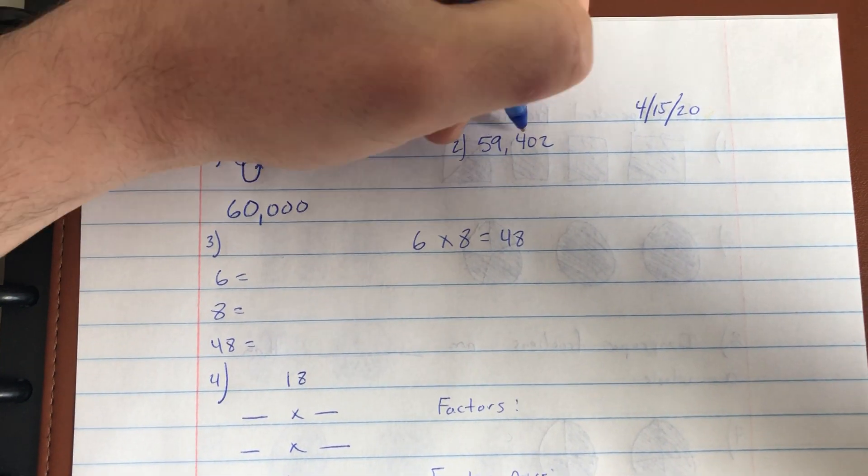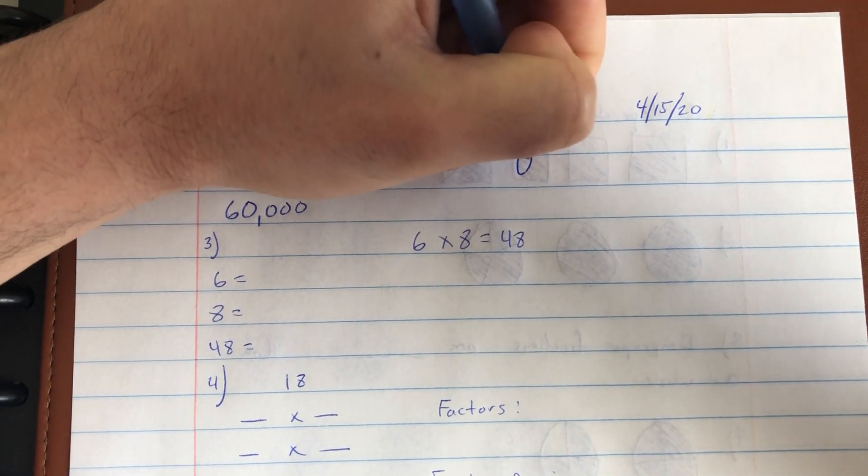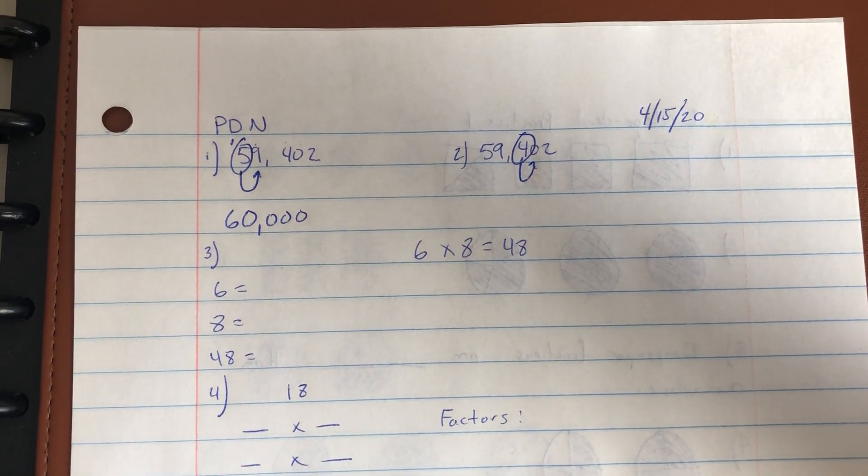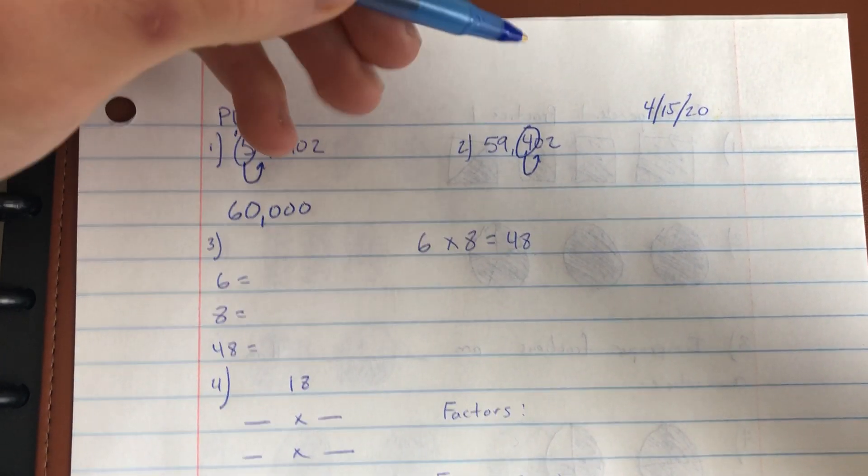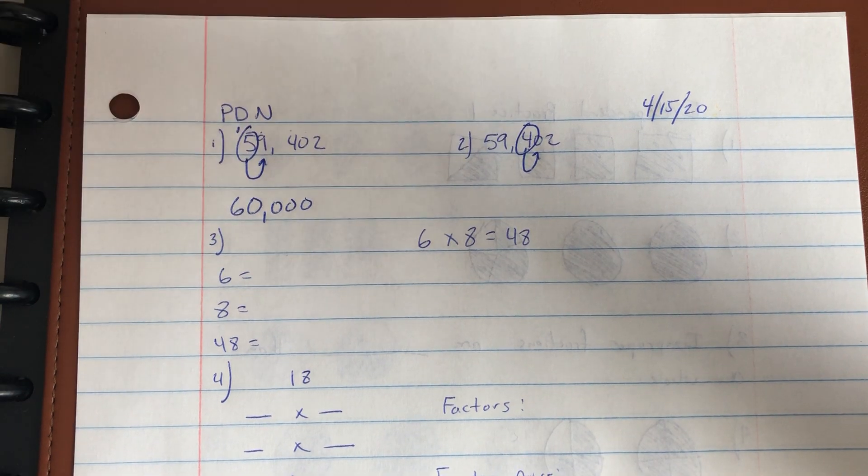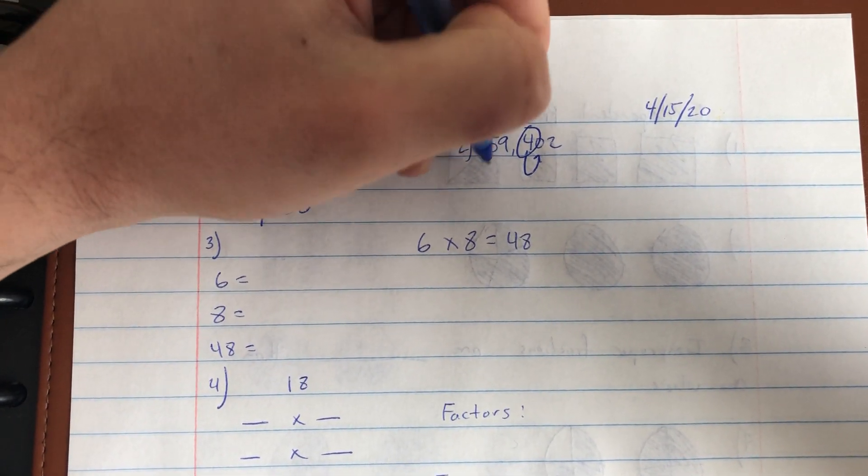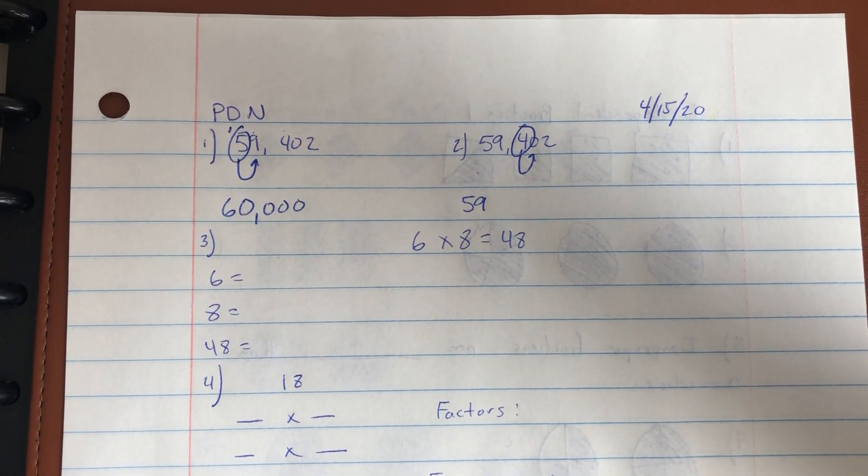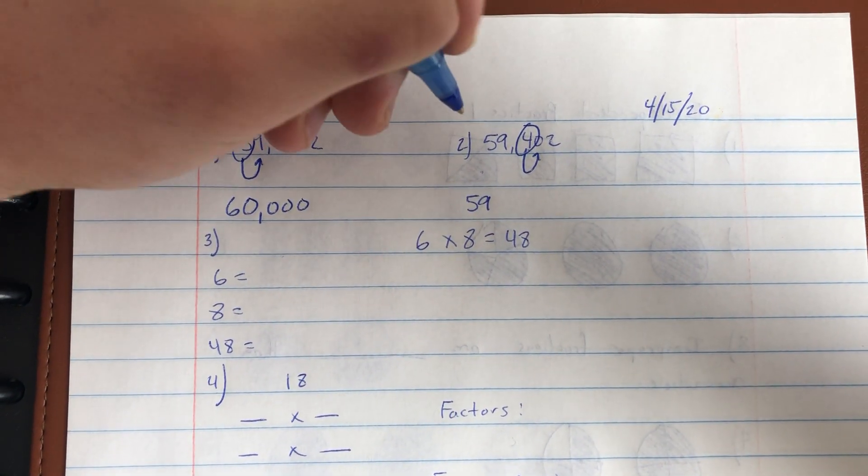Number two, I'm rounding that same number to the nearest hundreds place, so I'm gonna circle that four digit and then draw an arrow to the zero digit in my tens place. Zero is less than five, so I'm going to round down. I'm gonna keep my digits before the circle digit, the five in the ten thousands, and the nine in the thousands place the same.